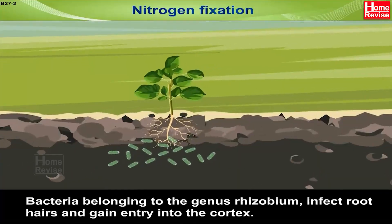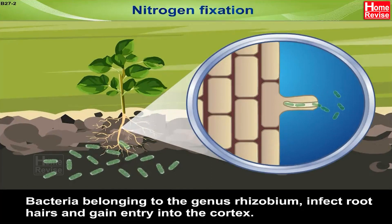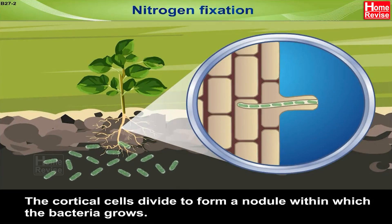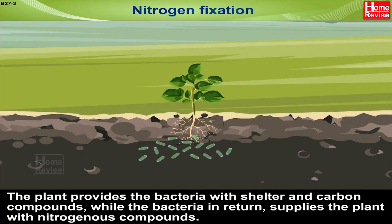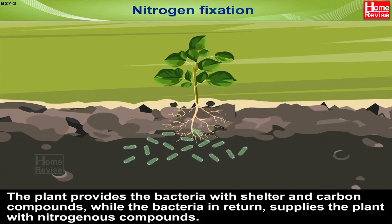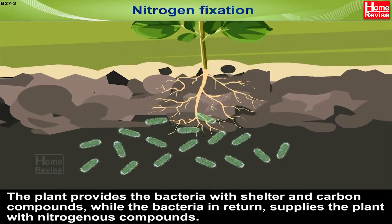Bacteria belonging to the genus Rhizobium infect root hairs and gain entry into the cortex. The cortical cells divide to form a nodule within which the bacteria grows. The plant provides the bacteria with shelter and carbon compounds, while the bacteria, in return, supplies the plant with nitrogenous compounds.